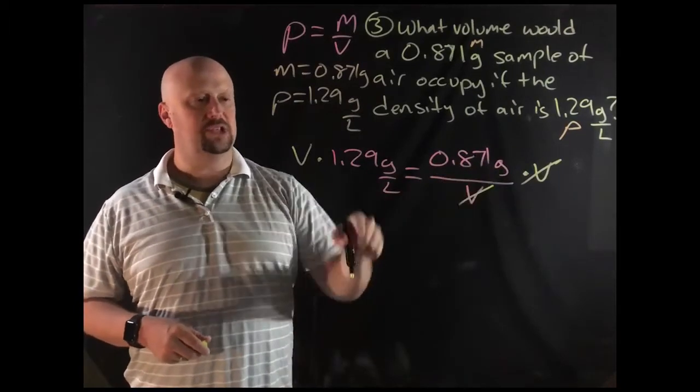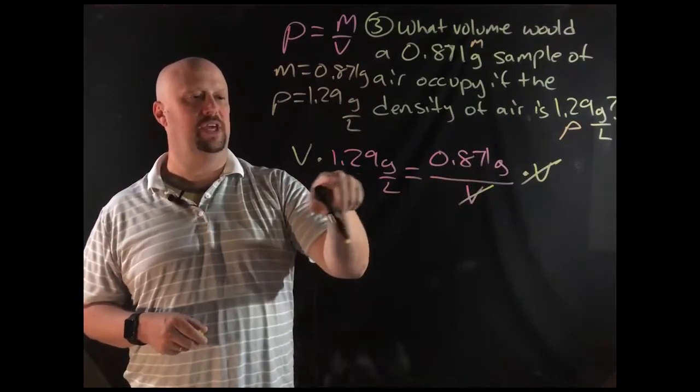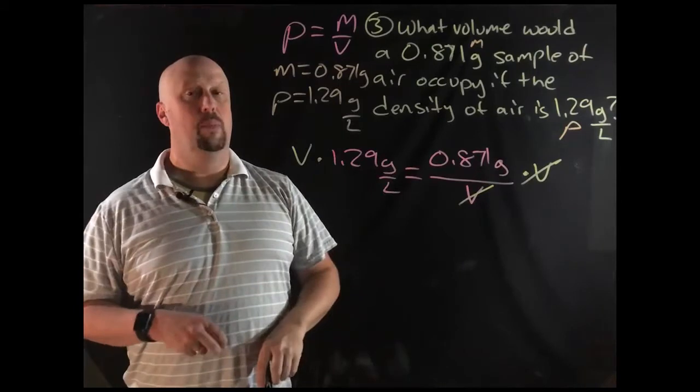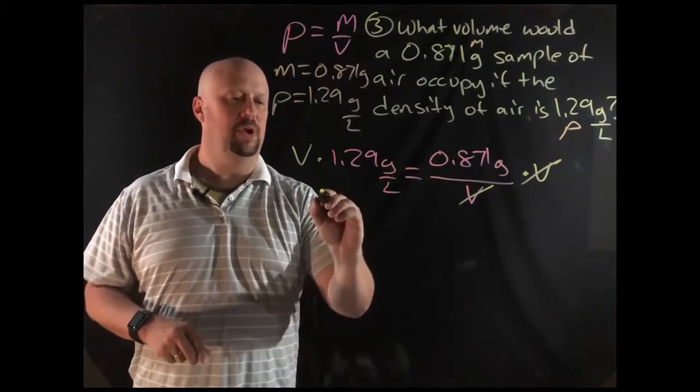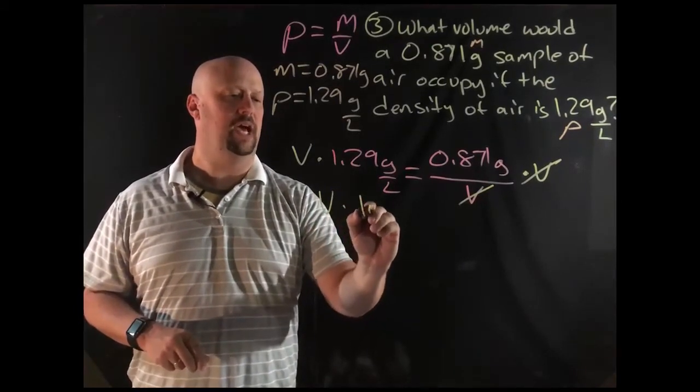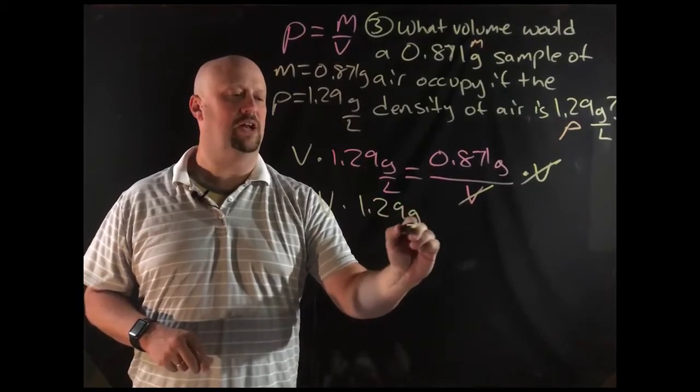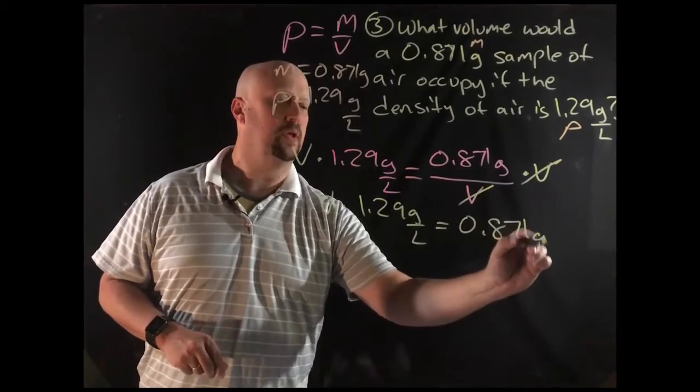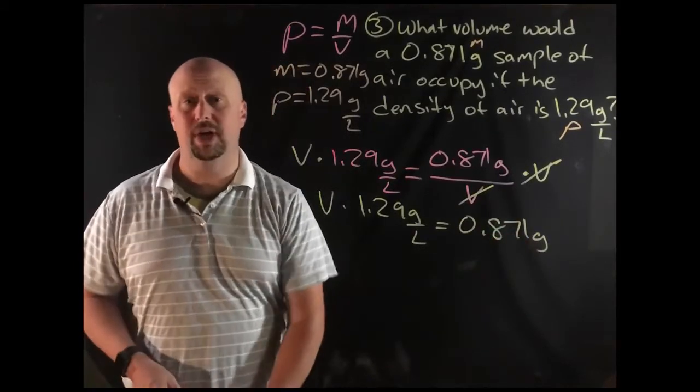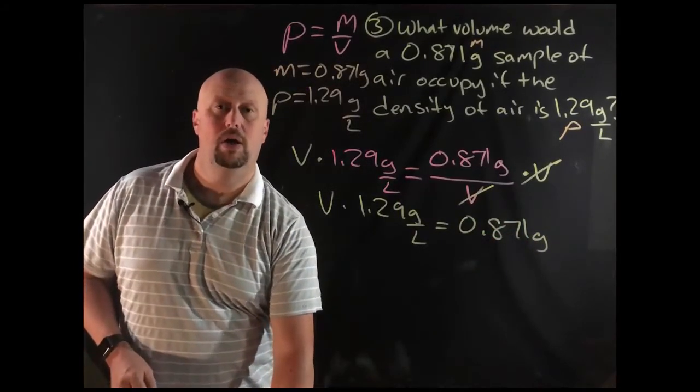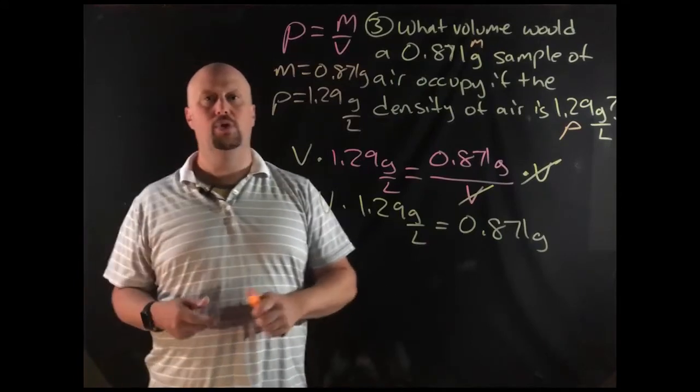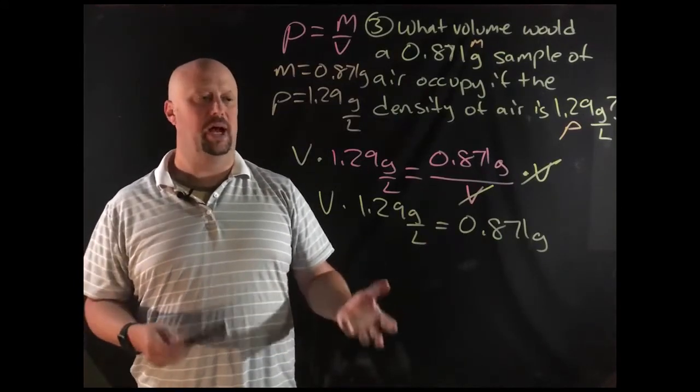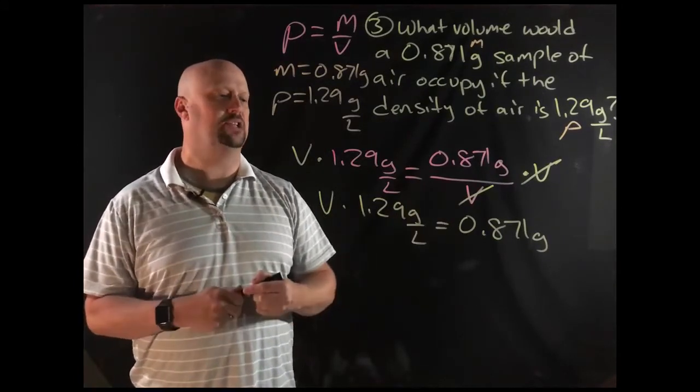So it cancels over there. This is my new equation, v times 1.29 equals 0.871 grams. So I'm going to rewrite that just to make sure that everybody's okay. Again, if I were working this out on paper, I probably wouldn't write out each step individually. But I think that's up to you as a student. I think that you have to know what your algebra skills are. If you know that sometimes you're struggling a little bit in algebra, then you definitely want to make sure that you're writing out each step.